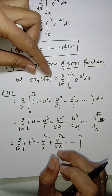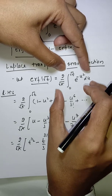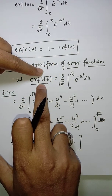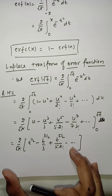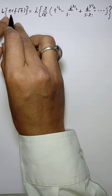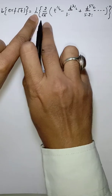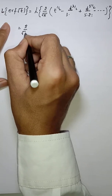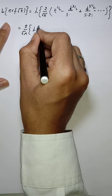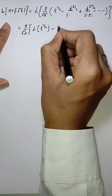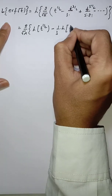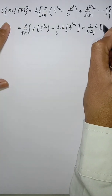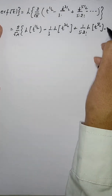Now we take the Laplace transform of this expression. Since the Laplace transform is linear, this equals (2/√π) × [L{t^(1/2)} − (1/3)·L{t^(3/2)} + (1/(5·2!))·L{t^(5/2)} − and so on].